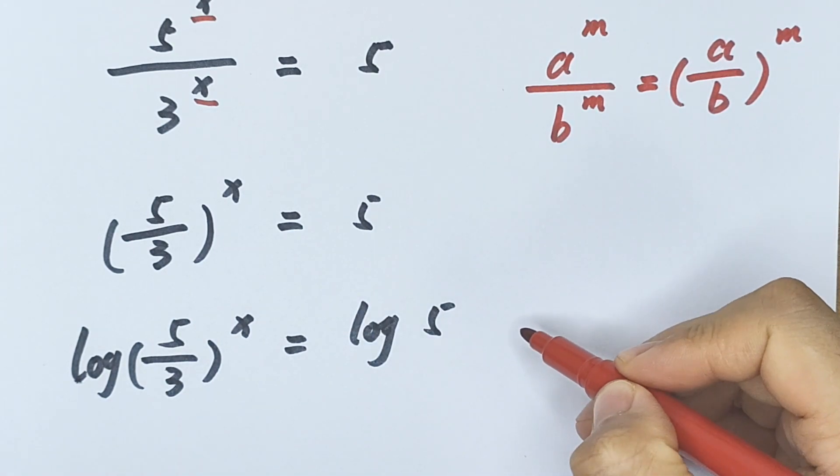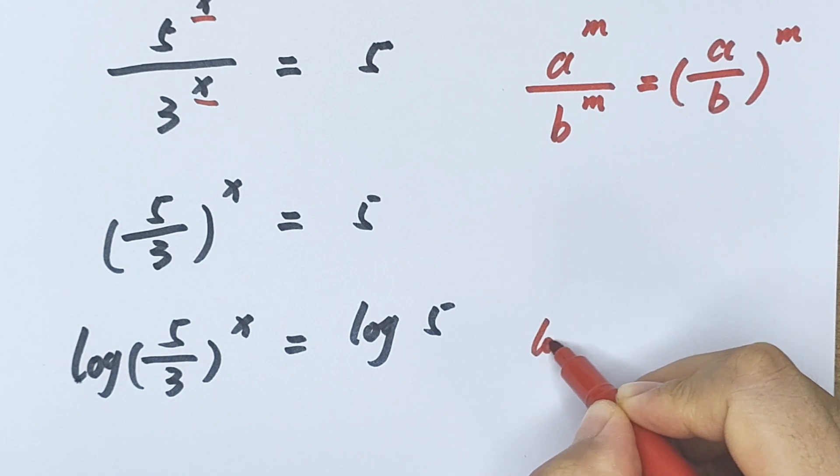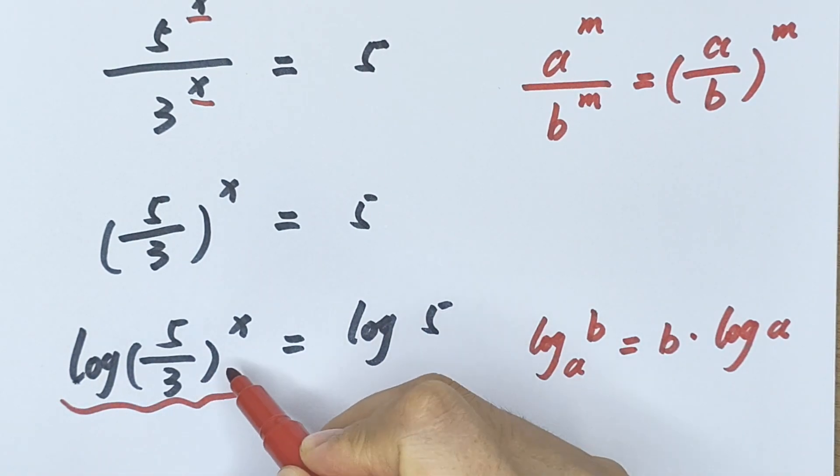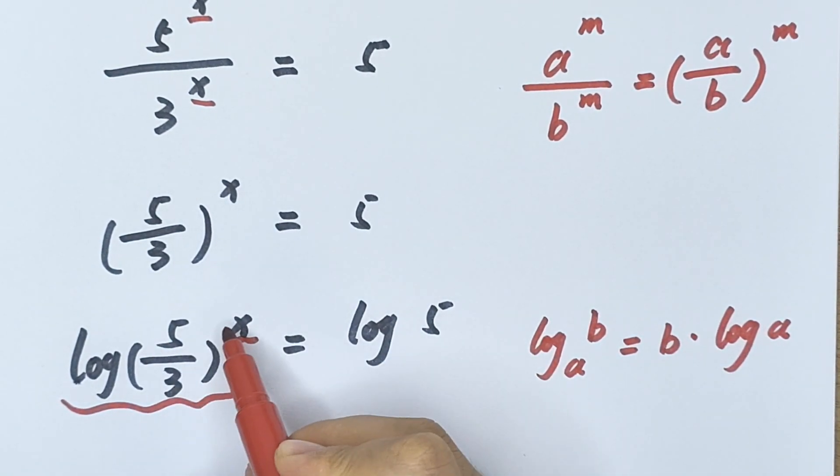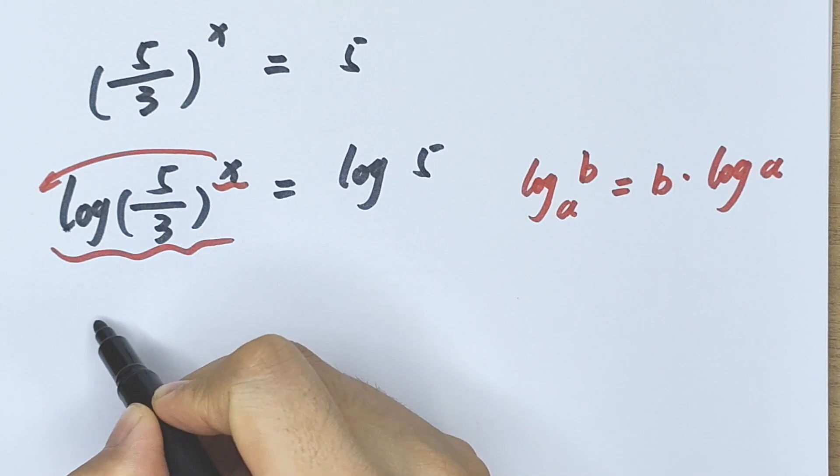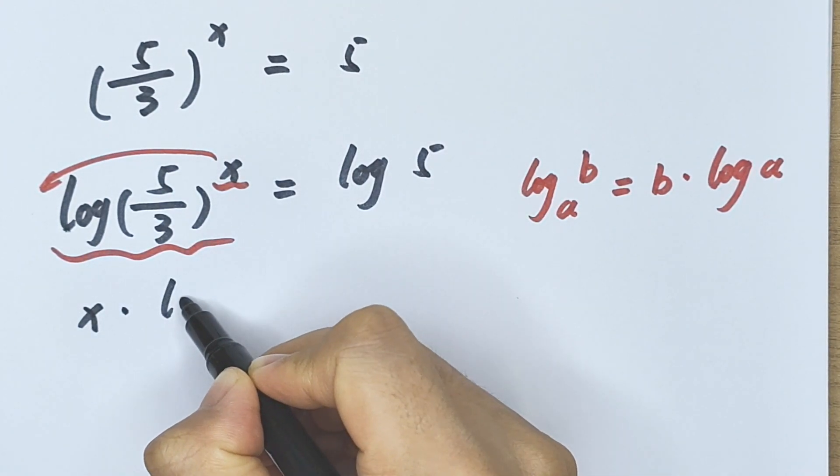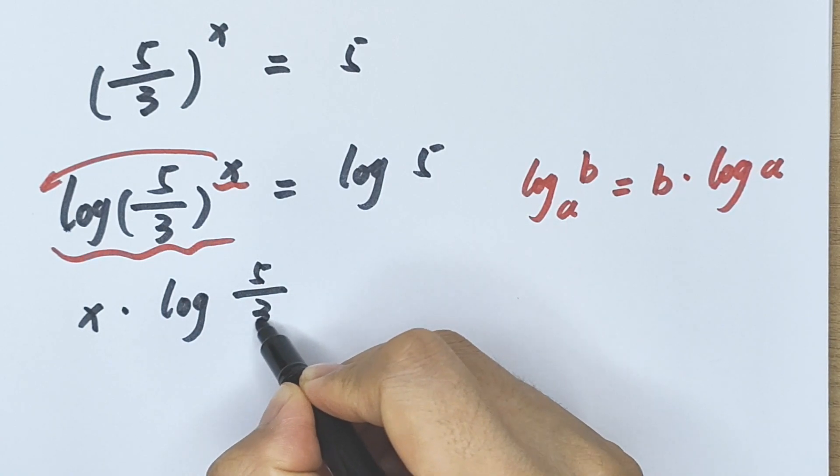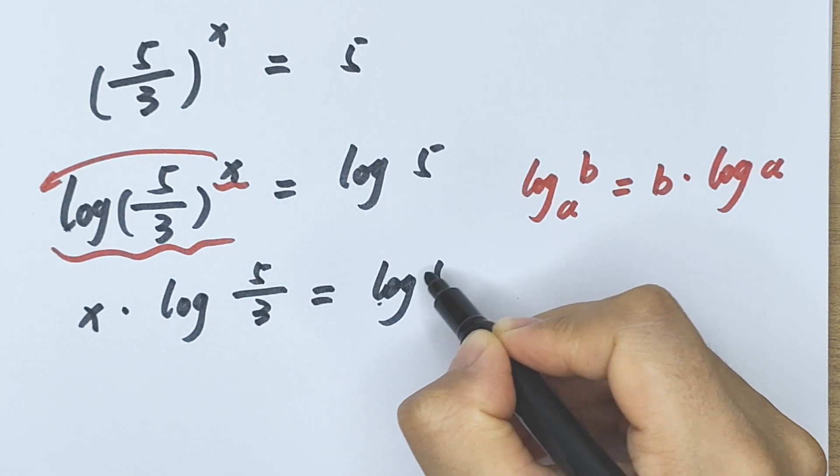So log of 5 divided by 3 in brackets to the power of x equals log 5. We apply the formula that log of a to the power of b equals b times log a. So this exponent, we move it to the front.